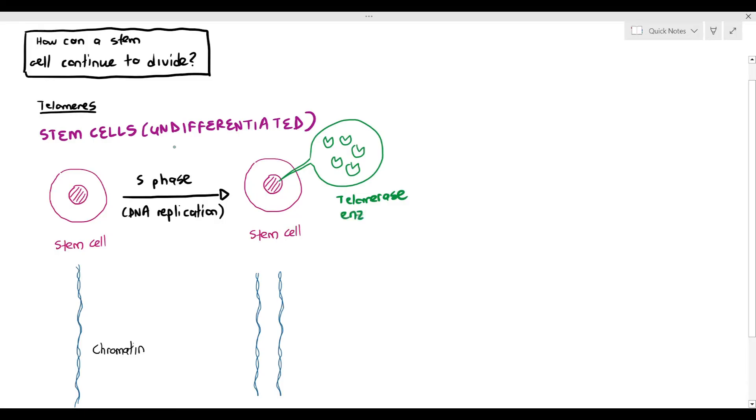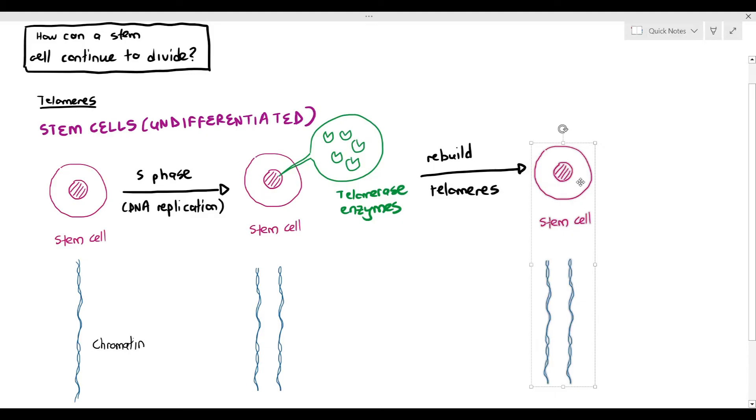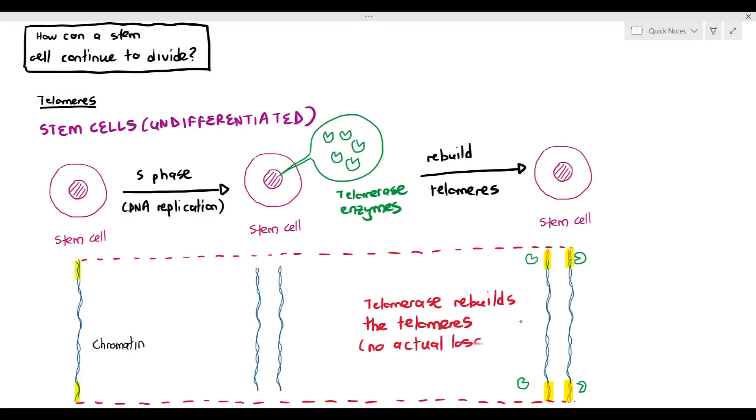Yes, the loss of telomeres actually does happen. But within the stem cell, they actually have these enzymes called telomerase. And the function of telomerase within the stem cells is very simple. Telomerase rebuilds the telomeres in the replicated chromatin. That's all it does. It adds more telomeres at the end, and what actually happens is no actual loss of telomeres happened within the stem cell at all, even though DNA replication took place.